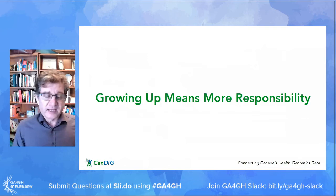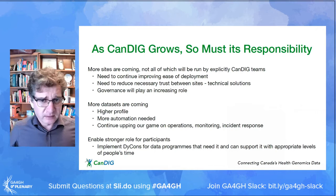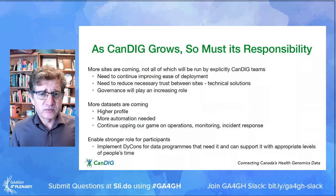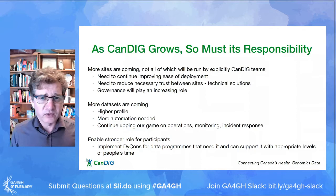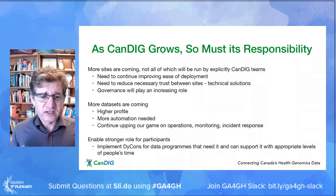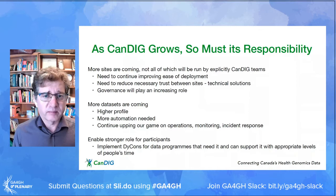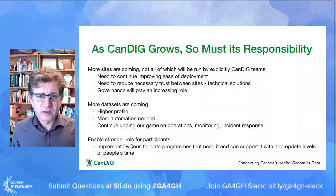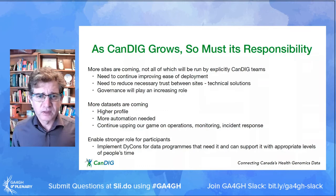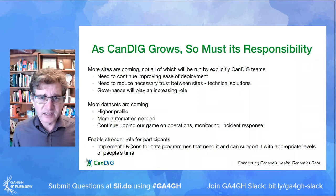CanDIG is growing, which is great, but CanDIG growing means there's more responsibility. More sites are coming, not all of which will be run by explicit CanDIG teams — that means we'll have to continue improving the ease of deployment and probably reduce the necessary trust levels between sites. We've just heard there are remarkable advances in technological solutions to support this. Governance will also play an increasing role. More data sets are coming, meaning we'll have to continue improving our practices around automation, operations, monitoring, and incident response. And we want to enable a stronger role for participants, including but not limited to dynamic consent.